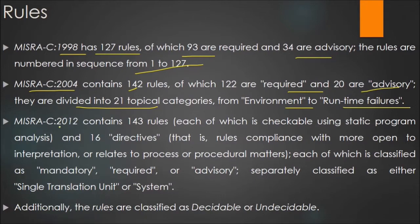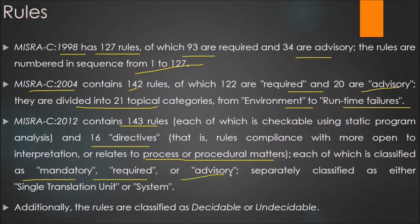In MISRA-C 2012, there are 143 rules and 16 directives. Directives are rules that are more open to interpretation and relate to process or procedural matters. Each rule and directive is classified as mandatory, required, or advisory, and is separately classified as either single translation unit or system. Additionally, rules are classified as decidable or undecidable.